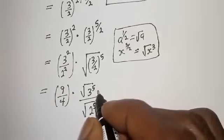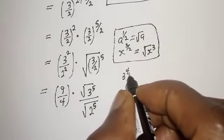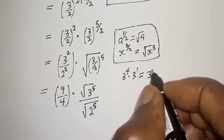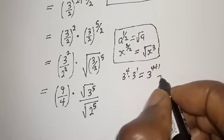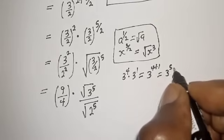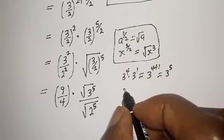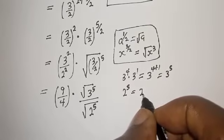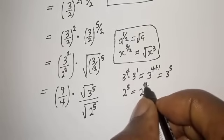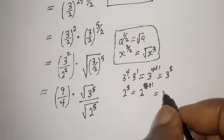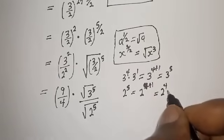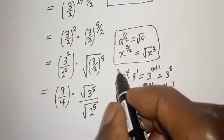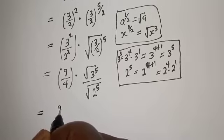Note that 3 raised to the power 5 can be written as 3^4 multiplied by 3^1, since 3^(4+1) = 3^5. Similarly, 2 raised to power 5 can be written as 2^4 multiplied by 2^1, since 2^(4+1) = 2^5.